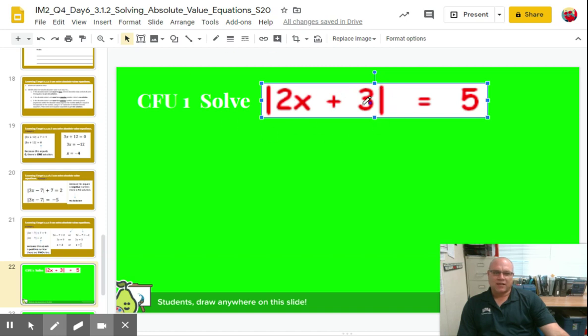And the right side is 5. So we are going to break this down into two equations. It's going to be 2x plus 3 equals negative 5 - I'm going to say negative 5 just so I don't forget that one, and I like to put the negative on the left side. And then 2x plus 3 equals positive 5.